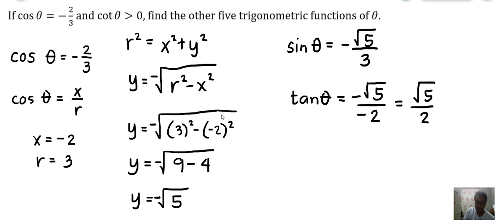And then cosecant of θ. Cosecant of θ is just the reciprocal of sine of θ, so this is basically -3/√5. We can actually rationalize this as -3√5/5, but -3/√5 is good enough.